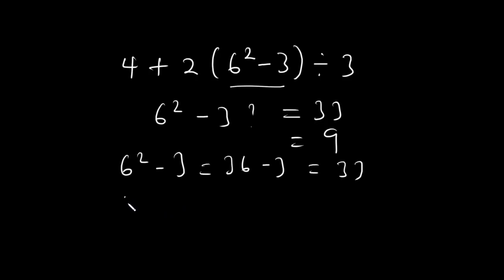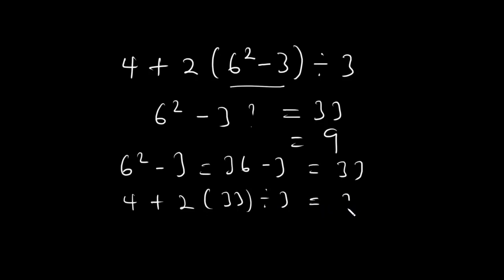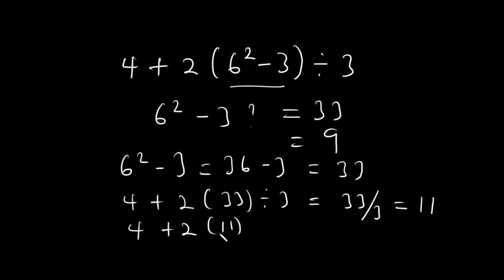Now we are going to have 4 plus 2 into brackets 33 divided by 3. According to BODMAS, division has a higher priority, so 33 divided by 3 gives us 11. Now we have 4 plus 2 multiplied by 11. So 2 times 11 is equal to 22, and 4 plus 22 is equal to 26. So the final answer is equal to 26.